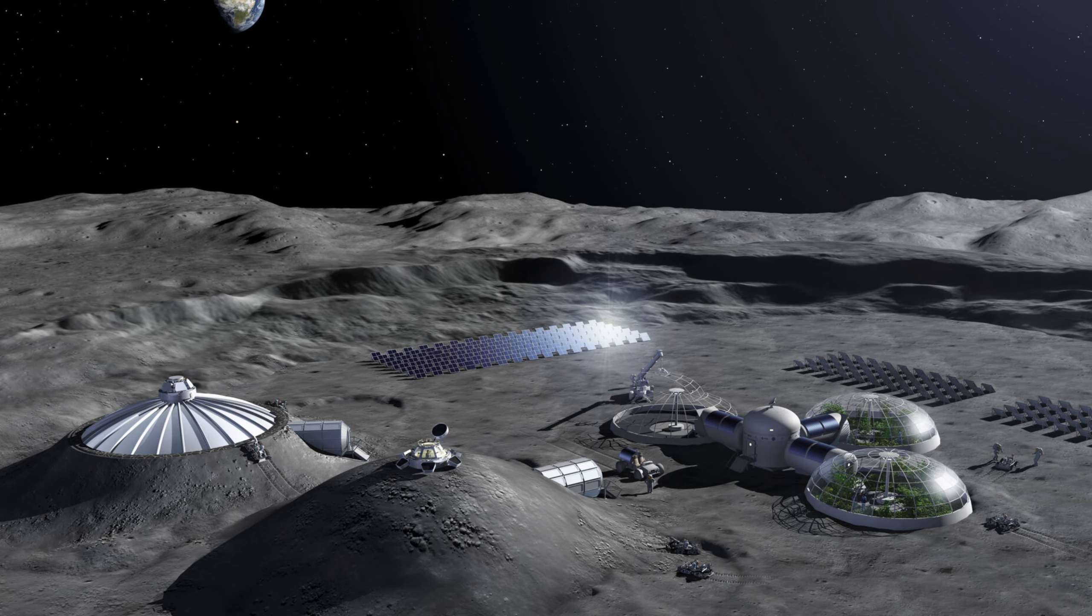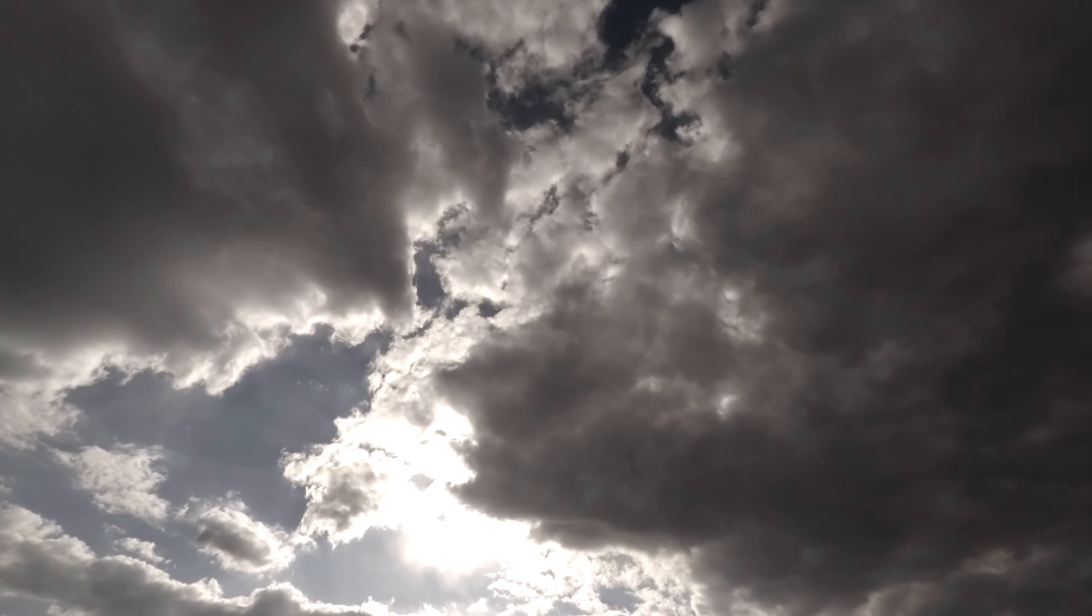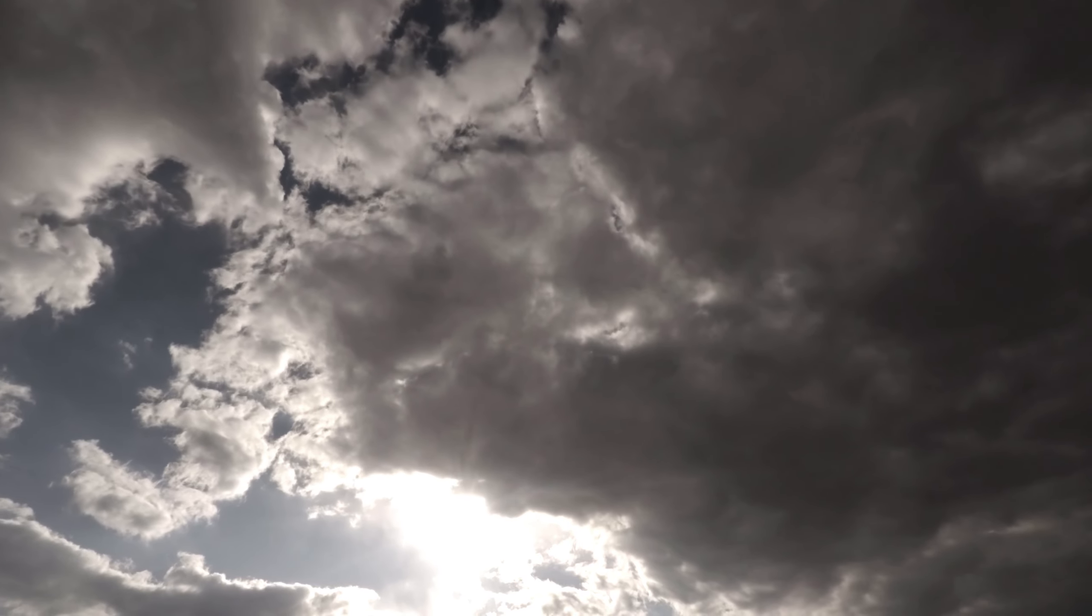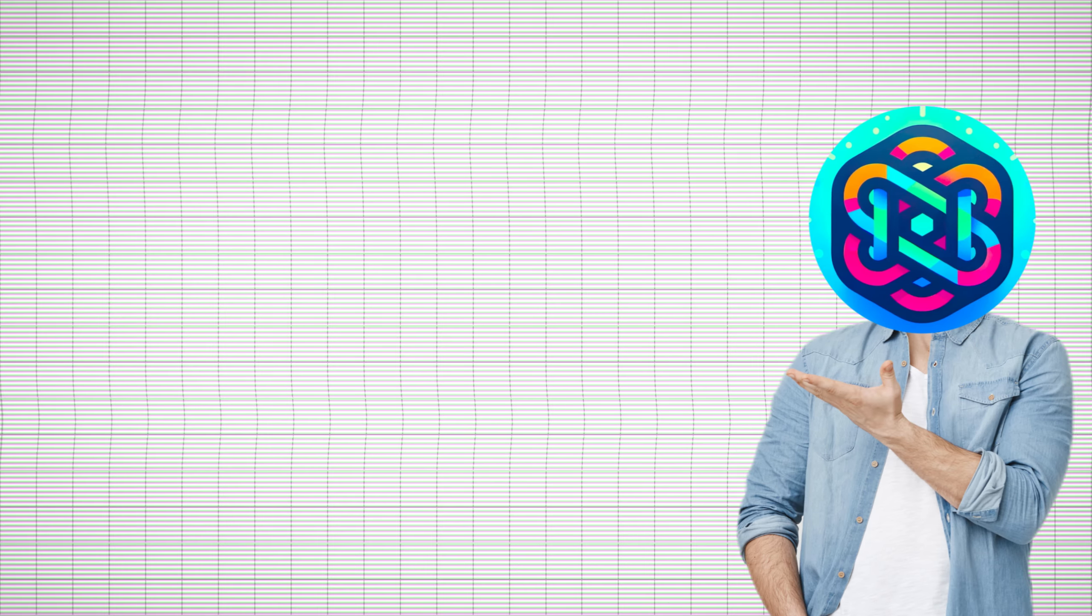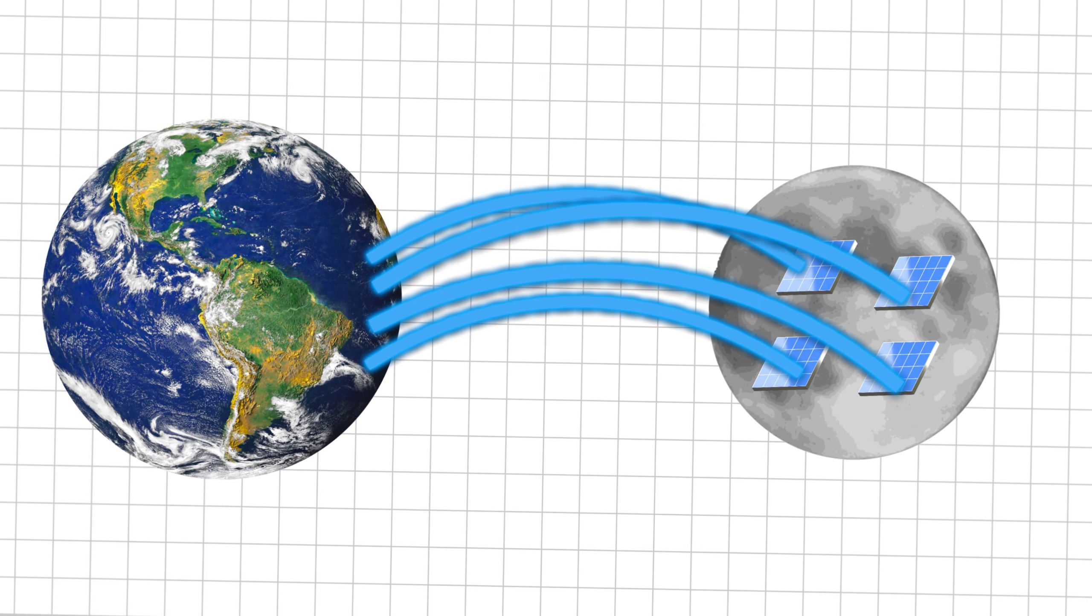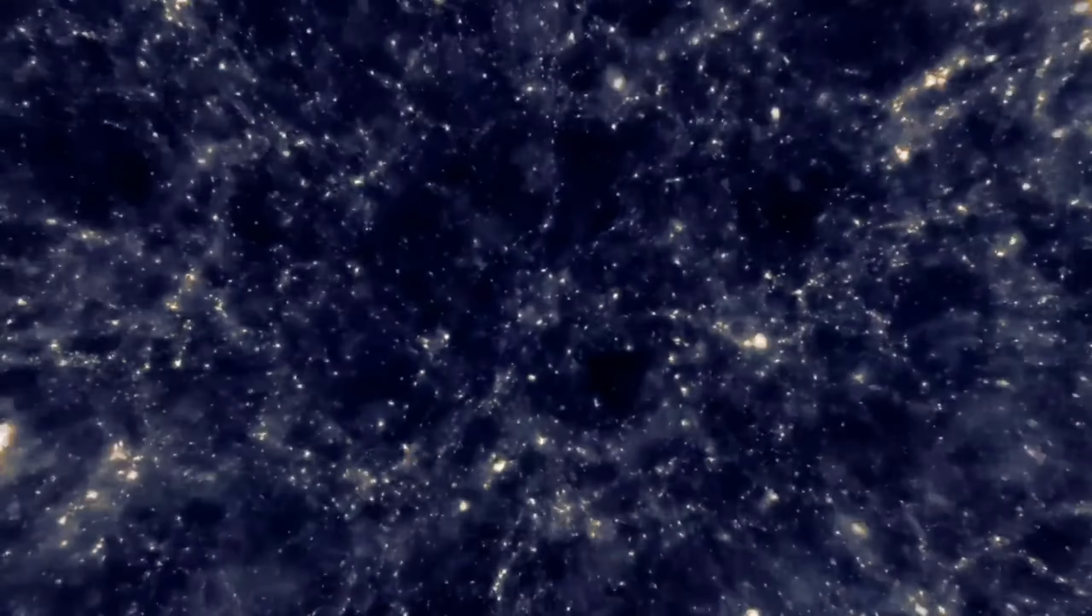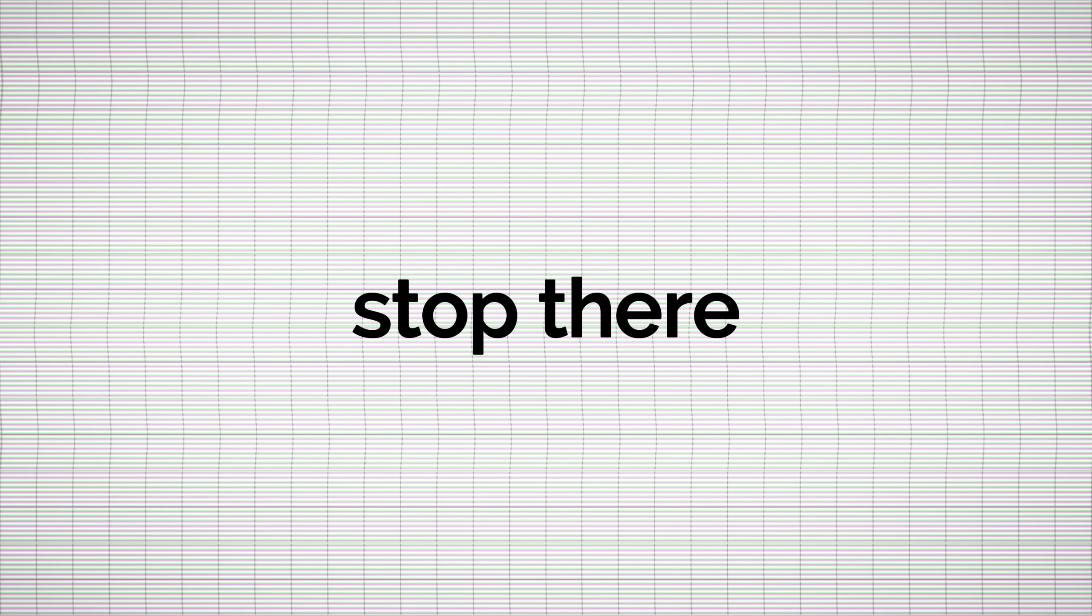Establishing a base on the Moon could have numerous benefits. We could build an observatory free from Earth's atmospheric interference, a space port taking advantage of lower gravity, and even a massive solar power station beaming energy back to Earth. These are practical, achievable goals that would advance our space exploration capabilities.